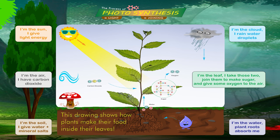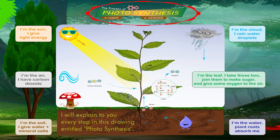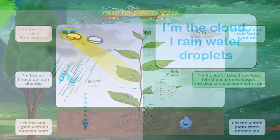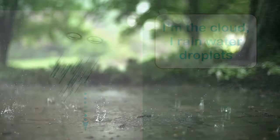I will explain to you every step in this drawing entitled photosynthesis. This drawing starts in the cloud — cloud rainwater droplets.